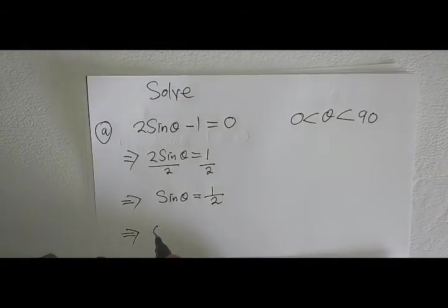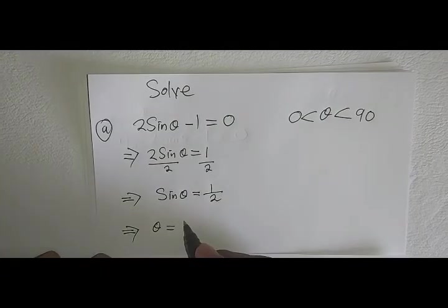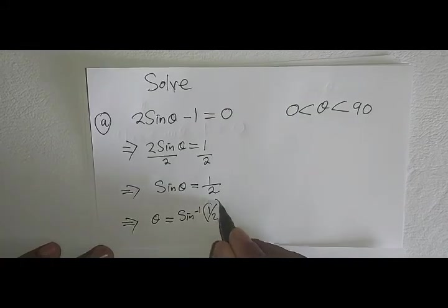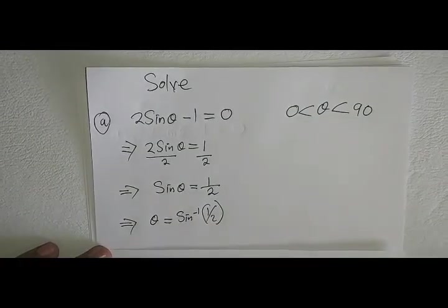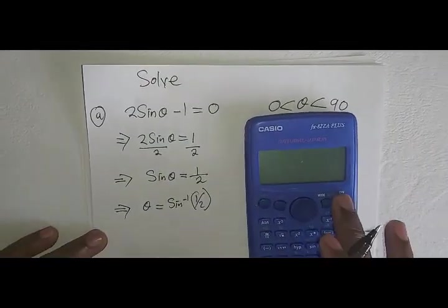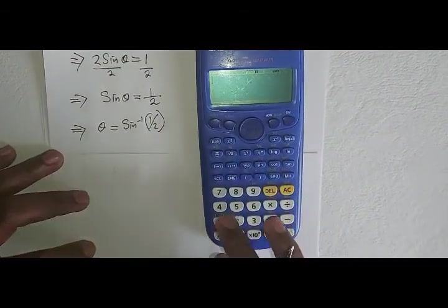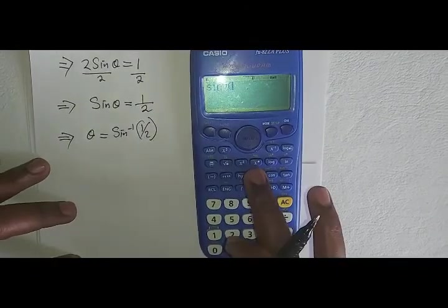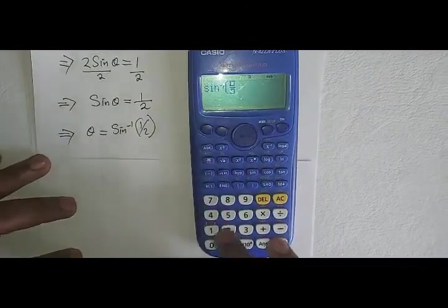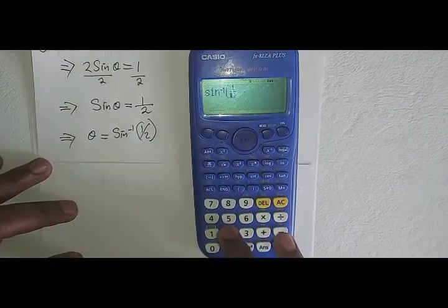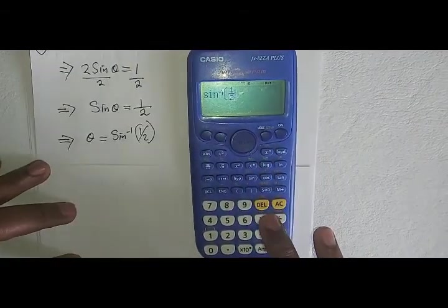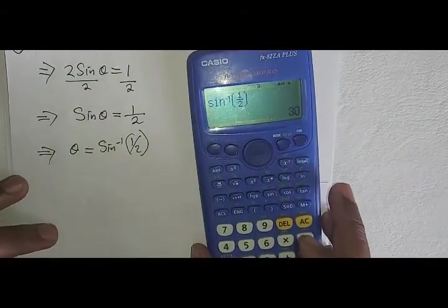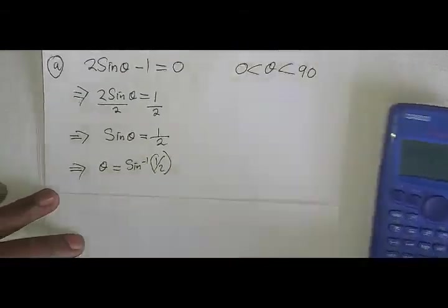Therefore, to be able to find θ now, it means θ will be equal to the inverse sin of 1/2. Then from there we can get it from our calculators - that is to say, it will be shift sin of 1/2, then close the bracket, which gives us 30 degrees.